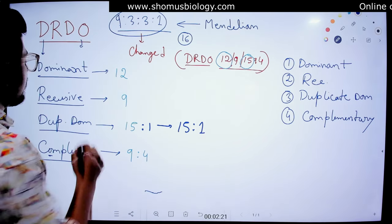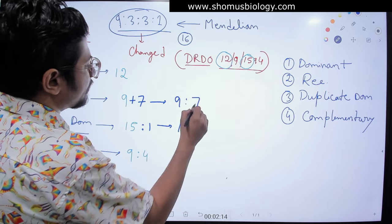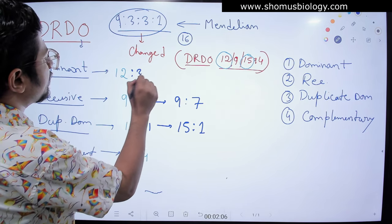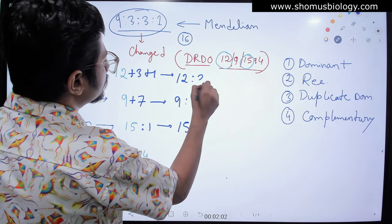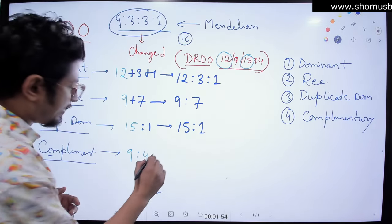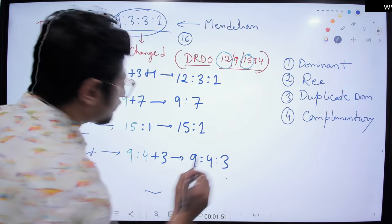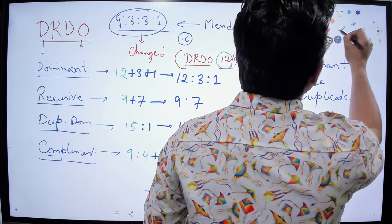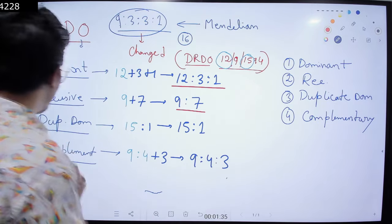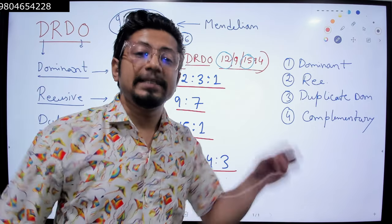For recessive epistasis: 9 needs 7 more to reach 16, so the ratio is 9:7. For dominant epistasis: starting with 12, we need 4 more, but instead of a single 4 we get 3 plus 1, so the ratio is 12:3:1. For complementary genes: starting with 9 and 4, we need 3 more to reach 16, giving us 9:4:3. So we have all four ratios: dominant 12:3:1, recessive 9:7, duplicate dominant 15:1, complementary 9:4:3.